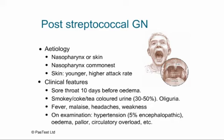Typical clinical features of post-streptococcal GN: the child experiences a sore throat around 10 days before the onset of mild periorbital edema, which becomes more generalised if left. Between a third and a half develop the typical smoky, coke or tea-coloured burgundy urine of macroscopic haematuria and become oliguric. Children are often febrile with malaise, headaches, and generalised weakness.